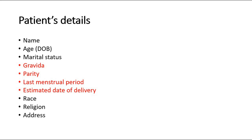Other details that we have to know are the last menstrual period, which is the first day of the last menstrual cycle, and the estimated date of delivery, which is usually 9 months plus 7 days after the last menstrual period. We also have to know the race, the religion, and also the address of the patient.